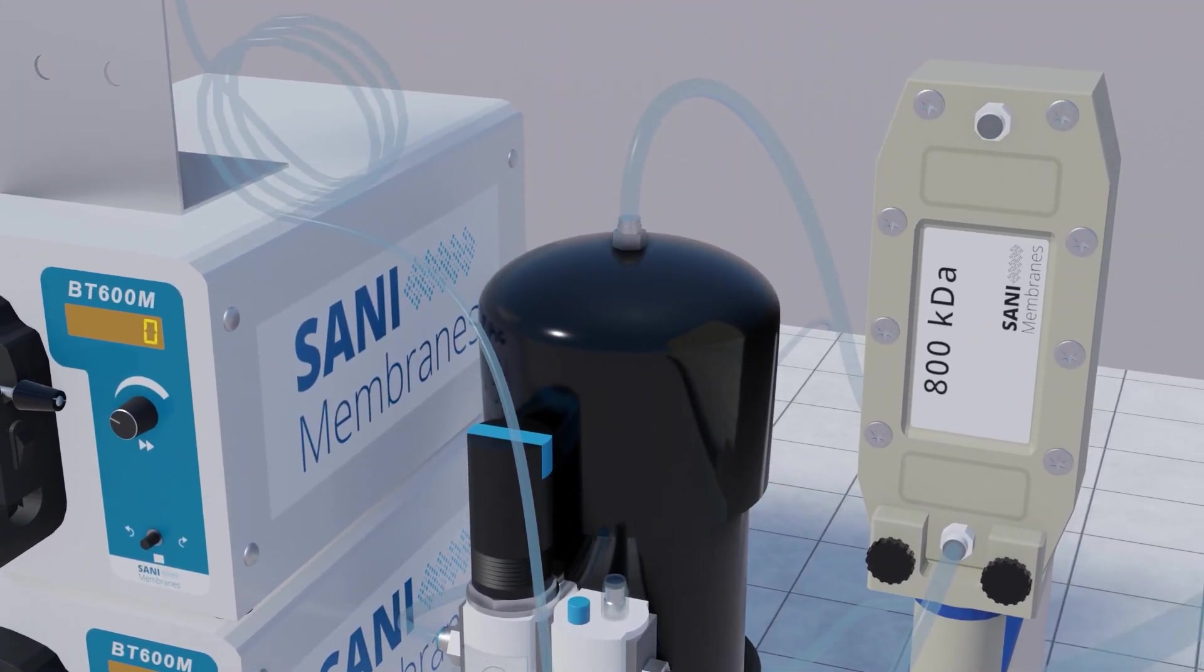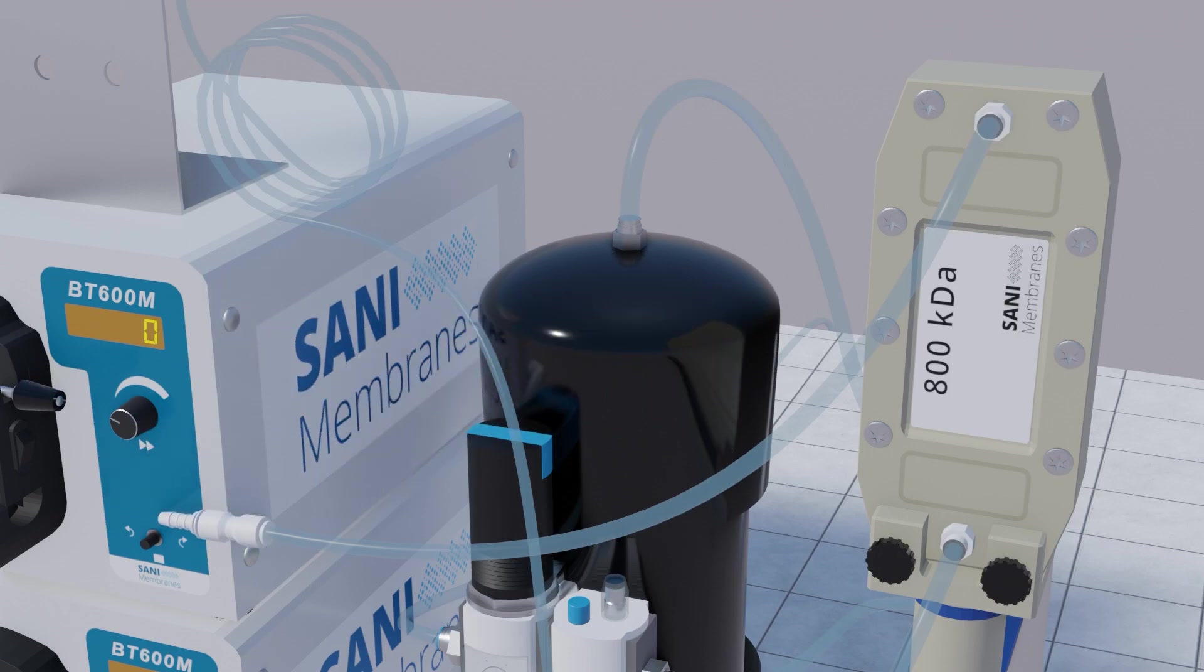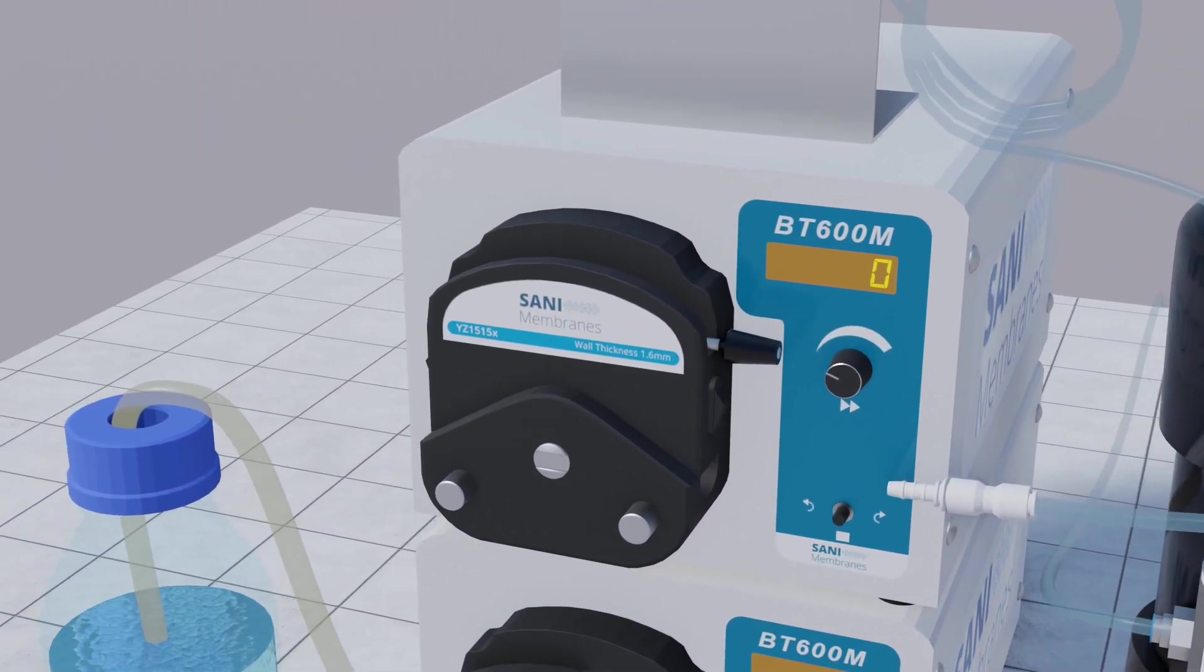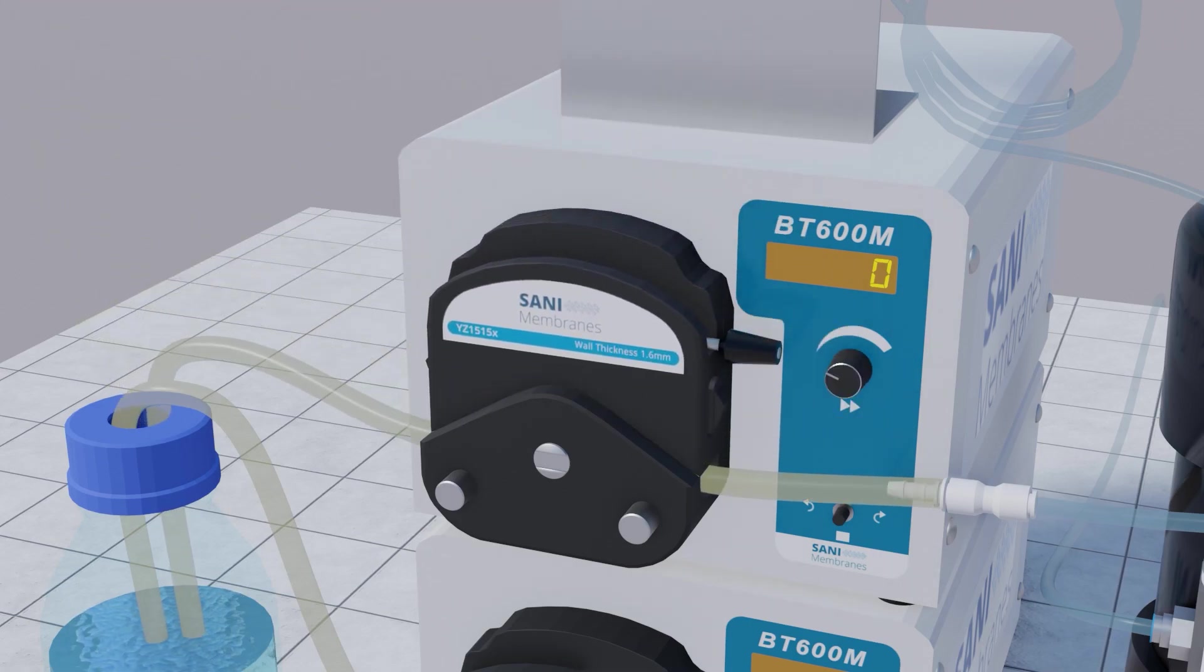Connect the 6mm tubing from the module outlet at the top of the unit to a hose barb adapter. Connect the hose barb to the pump tubing and place the pump tubing through the retentate pump and back to the feed vial.